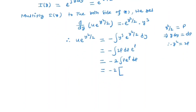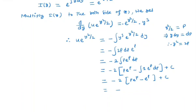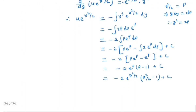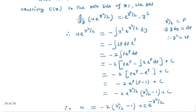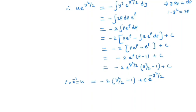We solve this integration by the integration by parts method: we get minus 2 times (p times e to the power p minus e to the power p) plus C, which equals minus 2 e to the power p times (p minus 1) plus C. Substituting back p equals y squared by 2, and multiplying by e to the power minus y squared by 2, we get u equals 2 times (y squared by 2 minus 1) plus C times e to the power minus y squared by 2. Since u equals x inverse, this is our general solution.